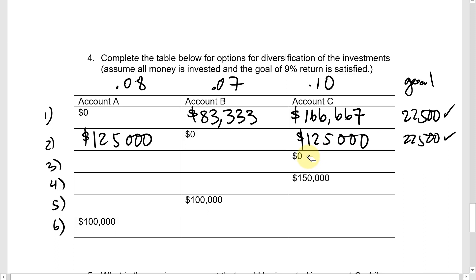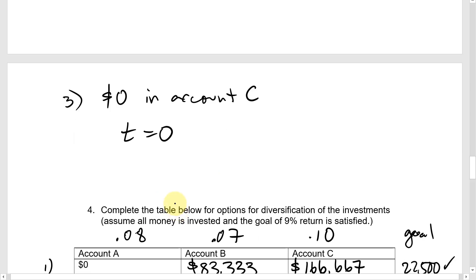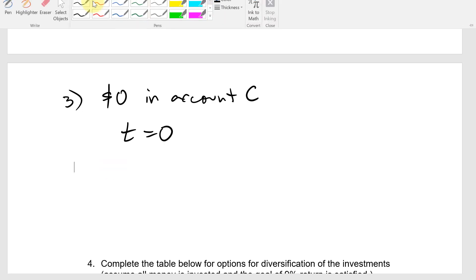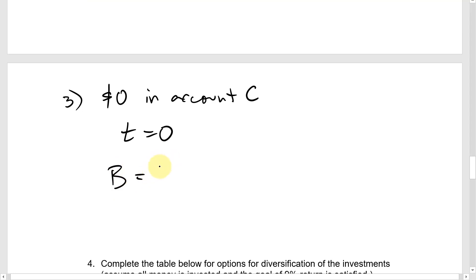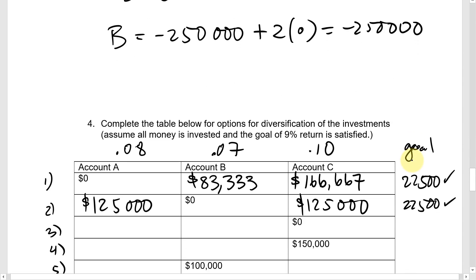Now suppose we put $0 in account C, meaning t = 0. But then B = −250,000 + 2(0) = −$250,000, which is negative — not possible. This makes intuitive sense: if you invest nothing at 10%, with only 8% and 7% returns available, there's no way to average a 9% return. So putting $0 in account C is not possible under our constraints.